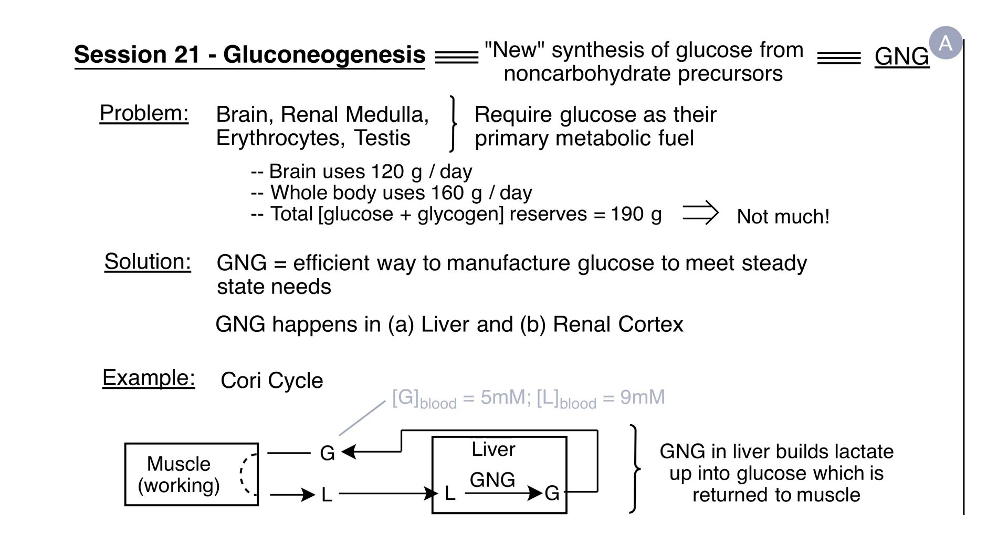The body compensates by having certain organs, specifically the liver and renal cortex, act as specialized manufacturing centers to produce and export glucose. The chemical raw materials they use include organic acids such as lactate, some amino acids, and the three carbon residues from odd chain fatty acids that enter catabolism.